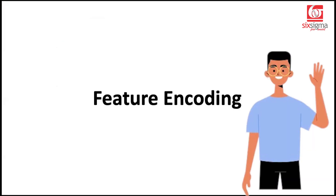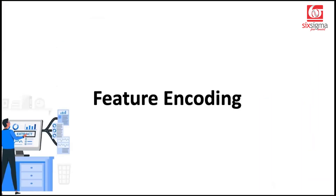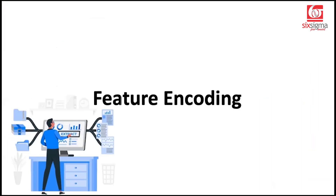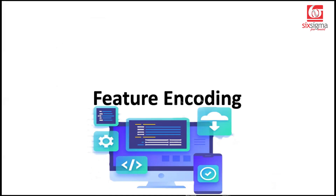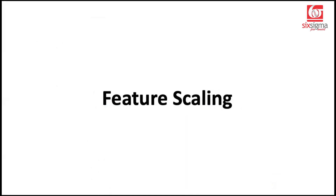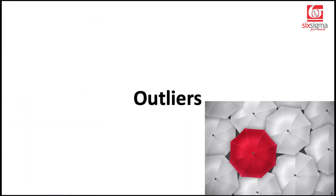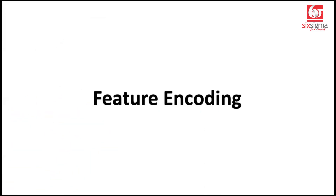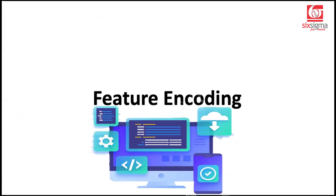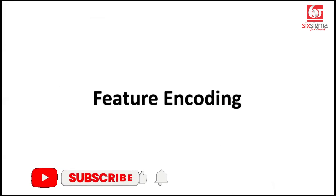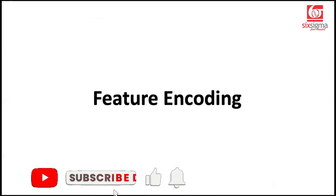Hello and welcome. In our sequence of videos on data pre-processing, today we're going to cover feature encoding. If you've been following the sequence, you know that we've already covered feature scaling, missing values, outlier treatment, and multicollinearity. And finally, we move to feature encoding, which is an important pre-processing step in almost all the real-world datasets.